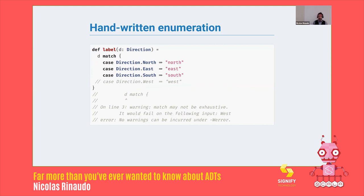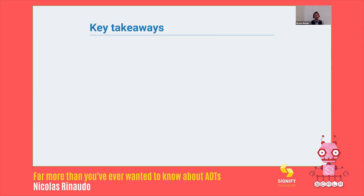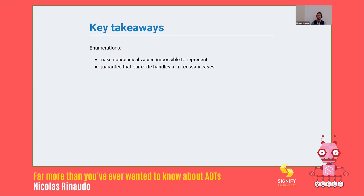Which is really pretty great, because now we are forced to handle every single case that our code needs. We can't have loopholes that allow the Gundam to blow up. So what have we learned so far? Enumerations make nonsensical values impossible to represent, and they guarantee that our code handles all necessary cases — provided you're not using Scala enumerations, because those are really bad. But these are good properties to have, and we're going to see that we can have more interesting properties.